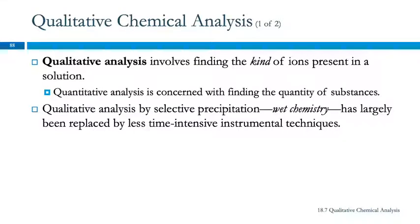Okay, so qualitative chemical analysis. This involves finding what is there, the qualities, which ions, the kinds of ions that are present in solution. Quantitative analysis is how much is there. Qualitative analysis was originally done by selective precipitation. It's commonly called wet chemistry because things get wet when you do this. It's largely been replaced by instrumental techniques, which are much less time intensive.